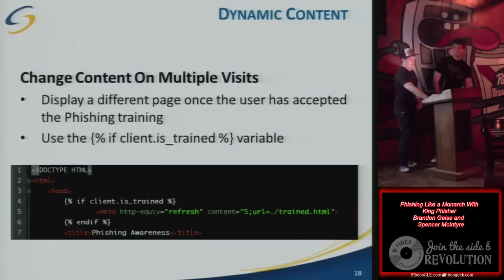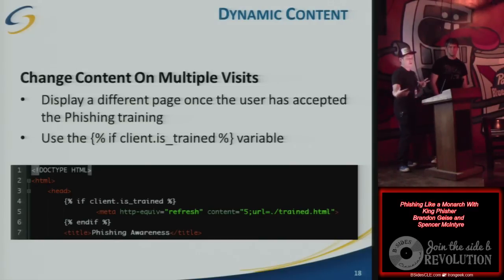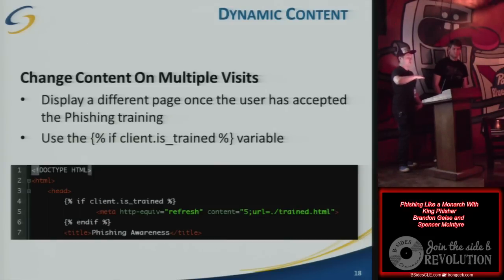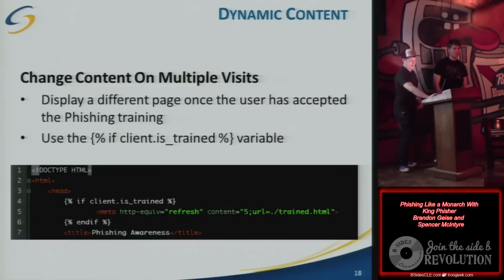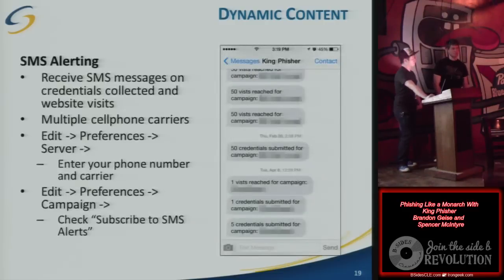Another feature kind of goes along with the variables. If you put in this script tag and use 'if client is trained,' you can do a meta refresh to a different page. Going along the same idea as showing a 404 after credentials are submitted — this is 'if trained.' If we're doing the low-level campaign where a user clicks a link and is redirected to an education page saying 'you've been phished, this is why it's bad, here are steps so you won't get phished again' — if they do that once, Kingfisher tracks it. If they try to visit that URL again, it'll show a different page. We can tell if users have been trained or submitted credentials, which allows us to create workflows to herd users through a progression of pages.